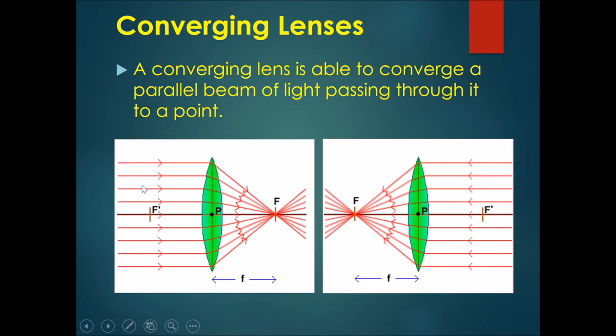If there are parallel beams coming towards this lens, they would all converge towards this point here, the one with the F. We'll talk more about it later. This position F is determined by how fat or how thin this lens is.